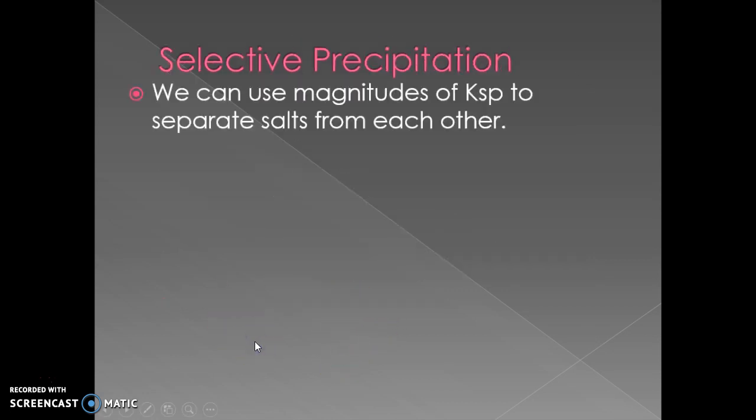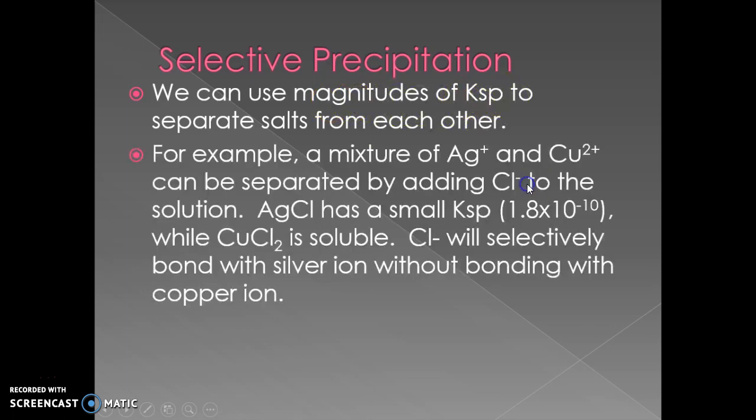You can use that idea to selectively precipitate various ionic substances with different values of Ksp. The magnitudes of the Ksp is what's going to let us separate salts from each other.